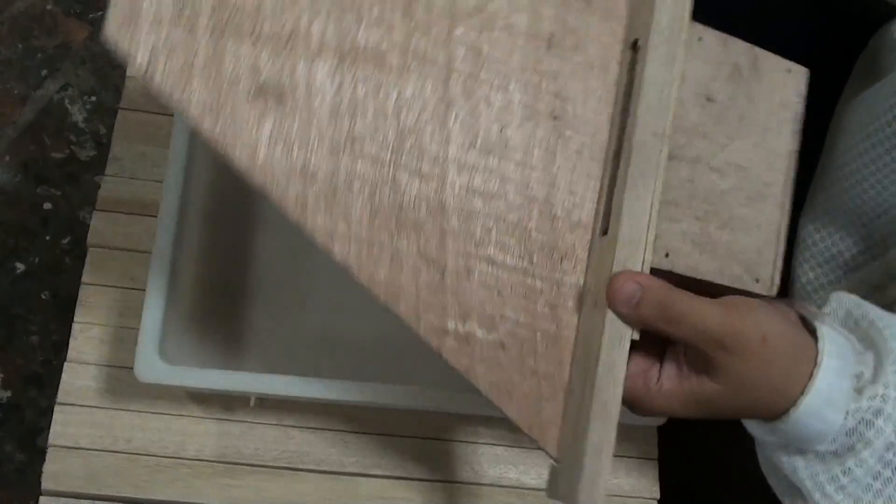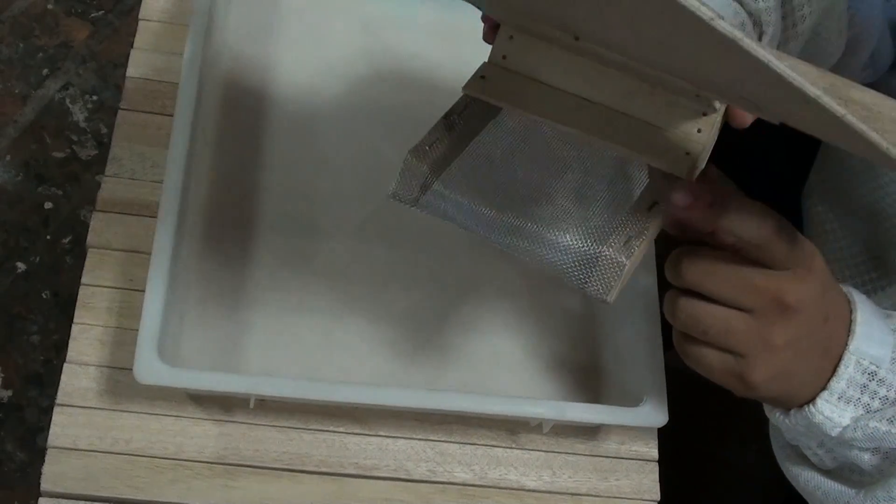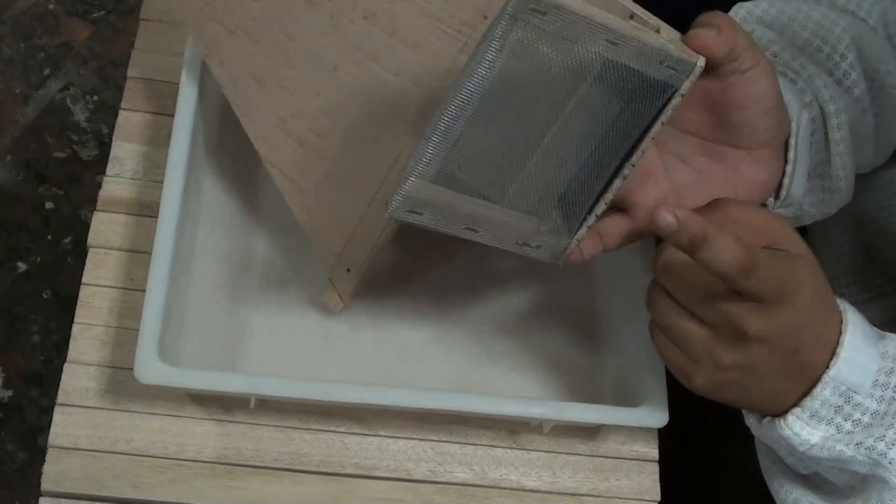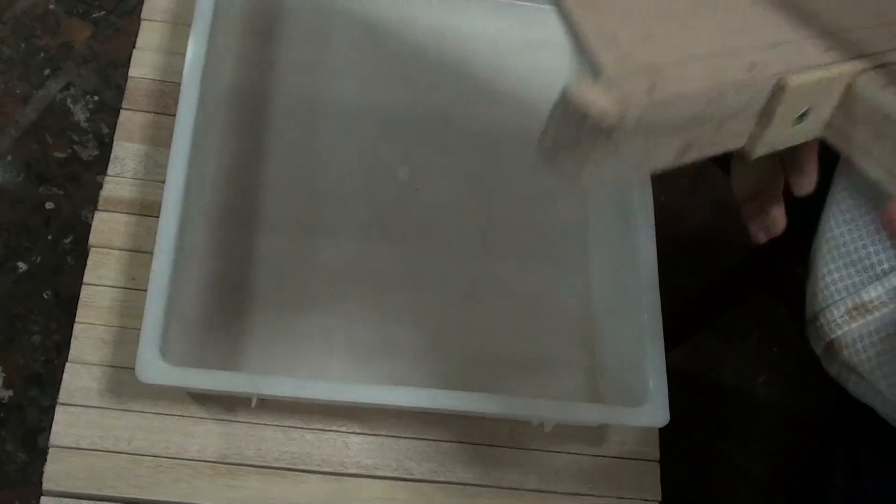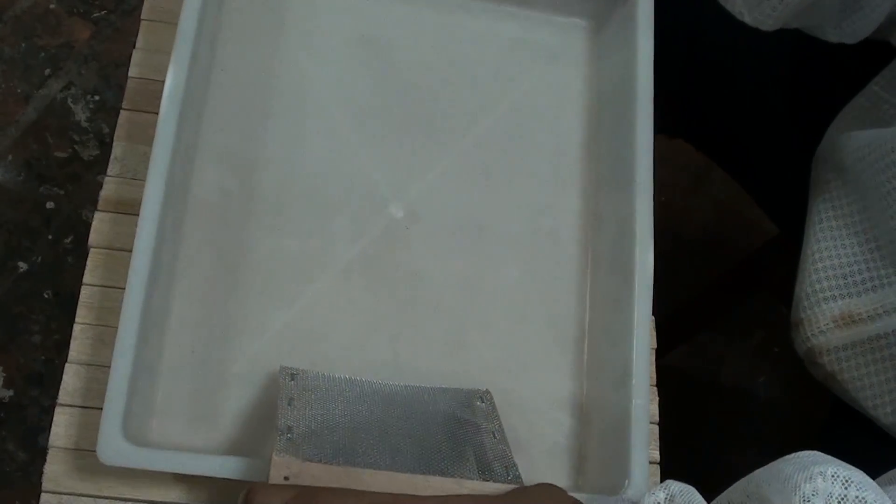And our division board with the ladder so the bees have access here. The ladder prevents drowning by having screens at the bottom and at the top part. If you're not using it as a feeder, it can become a division board and a bed for the bees.